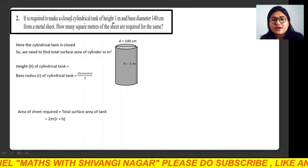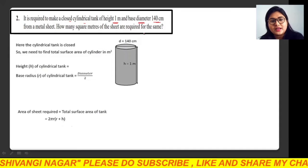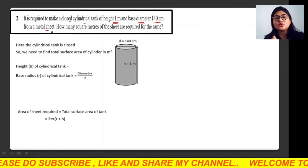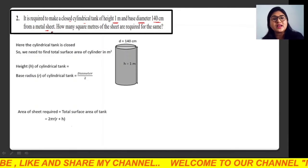It is required to make a closed cylindrical tank of height one meter with base diameter 140 centimeters from a metal sheet. Here we have a metal sheet. What we have to do is fold it and form a cylindrical tank.